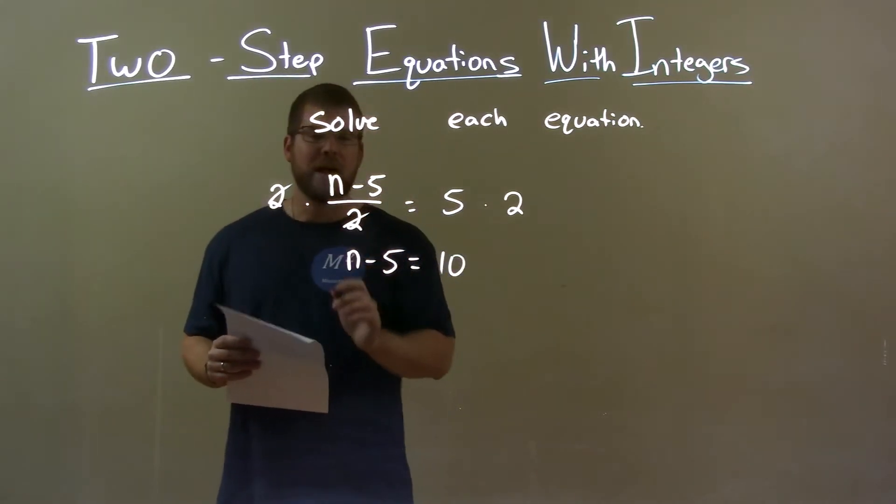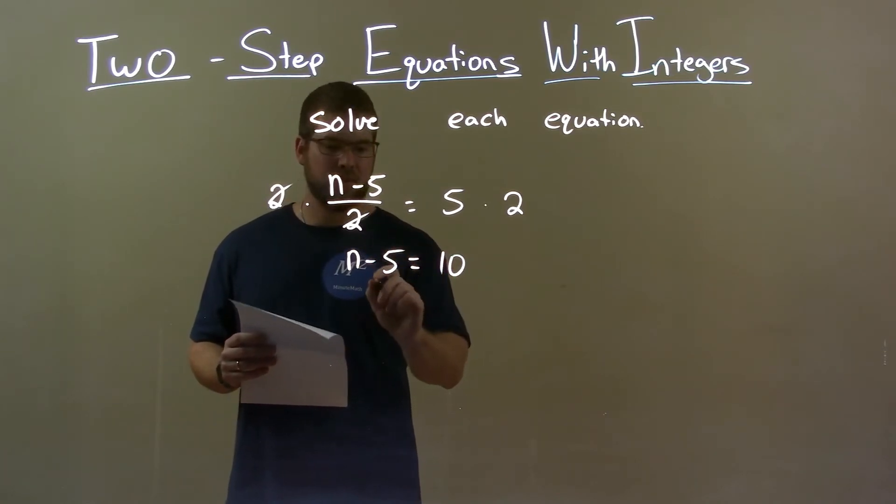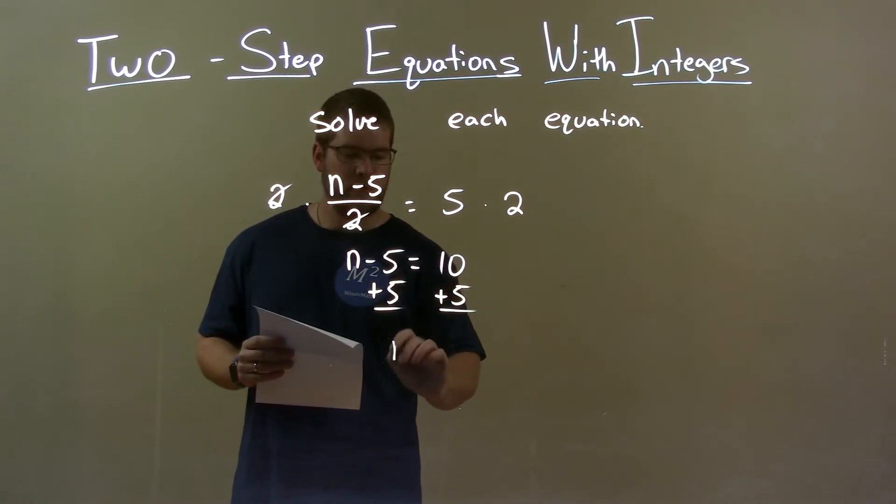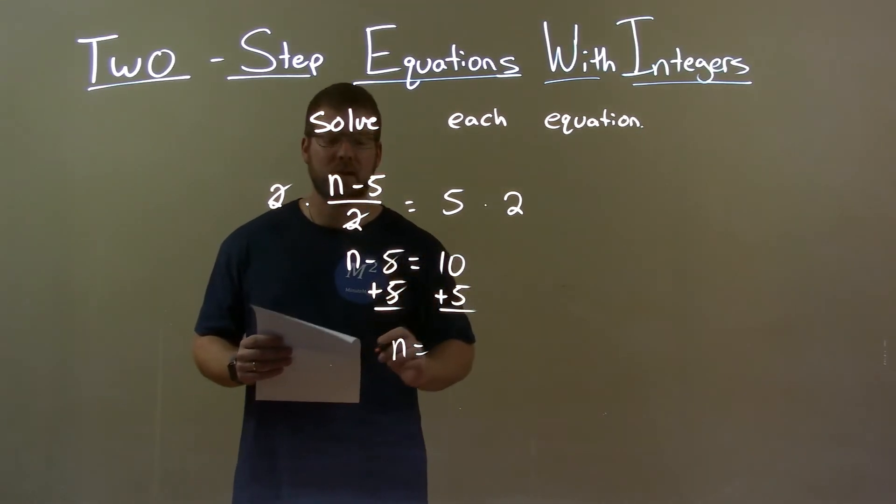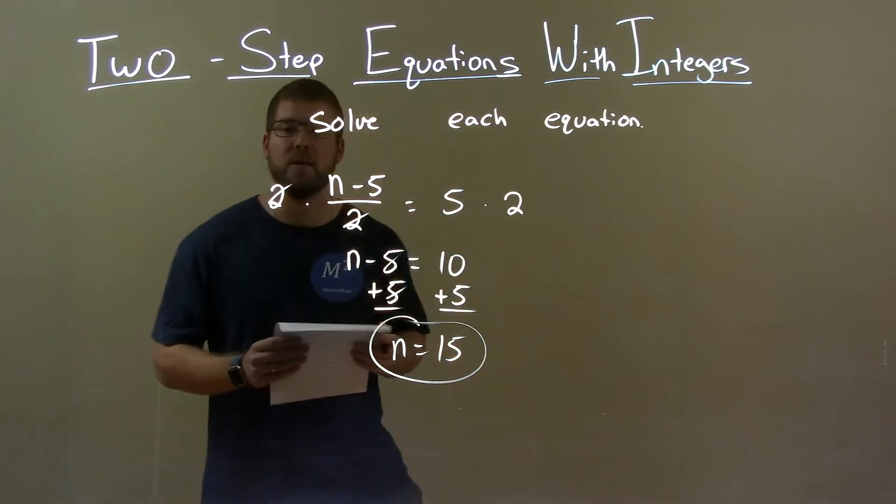Now, subtracting by 5, the opposite of that is addition. If we add 5 to both sides, we're left with n by itself. The 5's cancel. 10 plus 5 is 15, and so my final answer here is n equals 15.